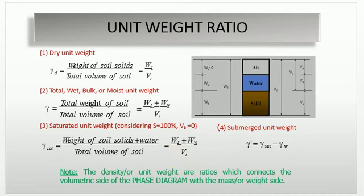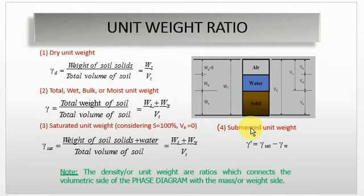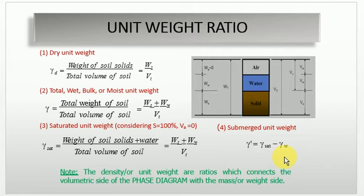The fourth is submerged unit weight, denoted by γ′ (gamma dash). Gamma dash equals gamma saturated minus gamma w, where submerged means the soil sample is below the water table in natural condition. Gamma w is the unit weight of water, which is 1 gram per cc or 10 kilonewton per meter cube. Note that unit weight is the ratio connecting the volumetric side of the phase diagram with the mass or weight side.